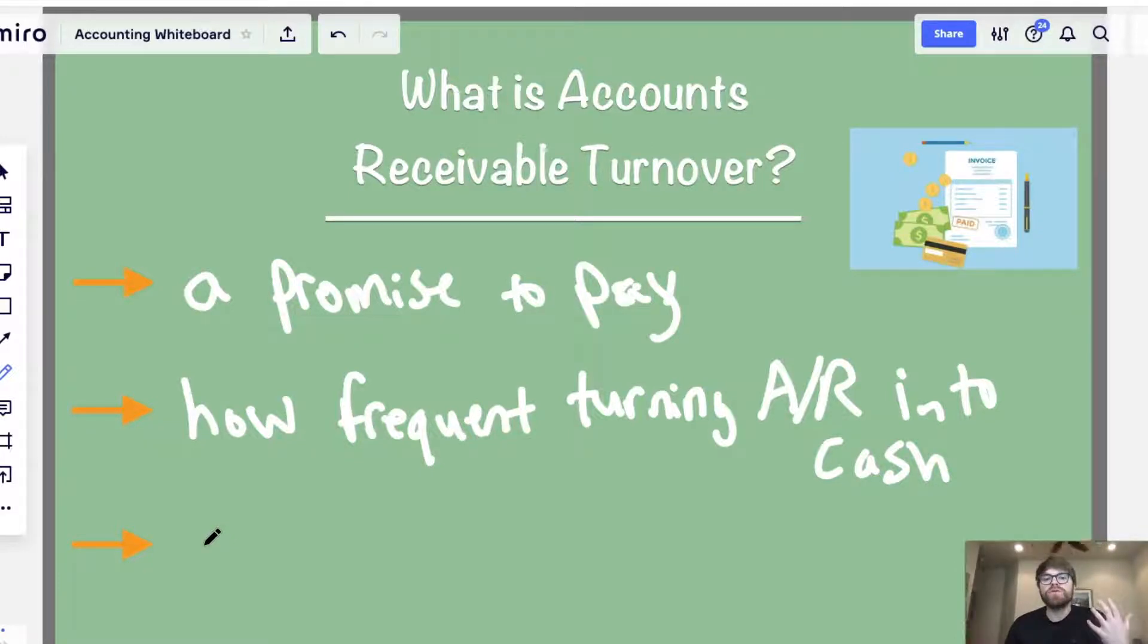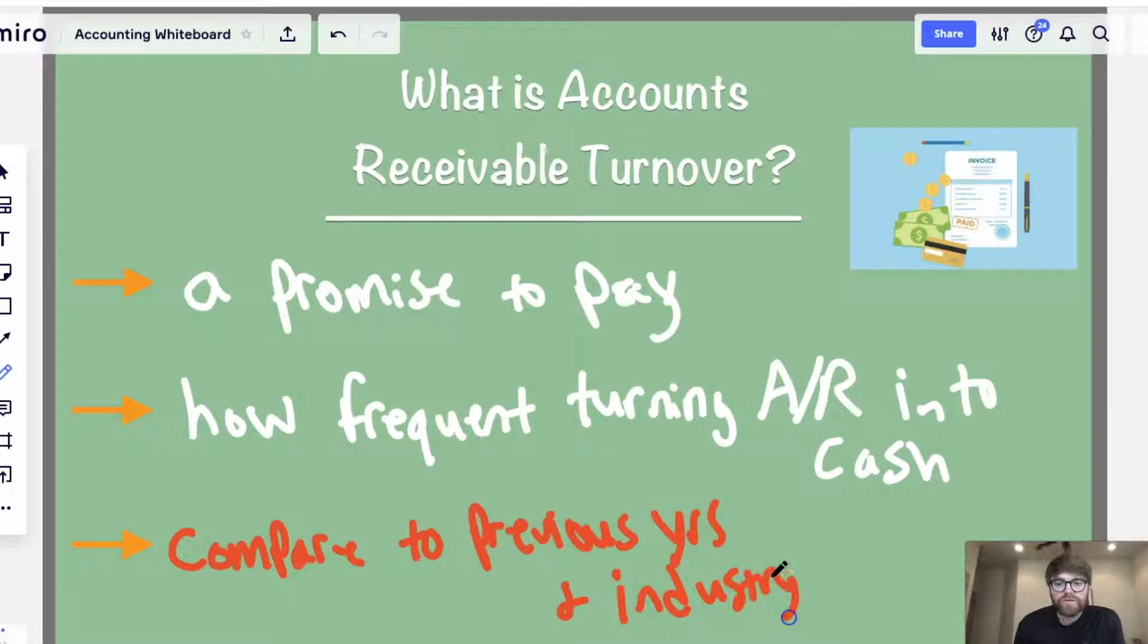Now, also something to think about here. Accounts receivable turnover, right? You want to think, how often am I doing it, and is that a healthy number? Is that healthy for a business? And to really figure that out, you have to compare. So, you compare that number to previous years and industry. So, you got to compare to both to really make sure that that works. Now, sometimes you might not have the industry average, and that's okay. You can look at your past years and see, how am I doing? How often am I turning my accounts receivable into cash? How often am I collecting accounts receivable?